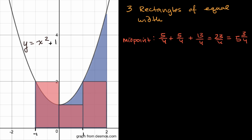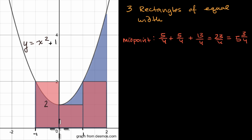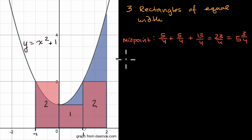Looking at the left endpoints of our intervals: the first left endpoint is x equals negative one. Negative one squared plus one is two, times the width of one, gives us two. The second interval's left endpoint is x equals zero: zero squared plus one is one, times one is one. The third interval's left endpoint is x equals one: one squared plus one is two, times the width of one equals two. So using left endpoints, we get two plus one plus two, which equals five.